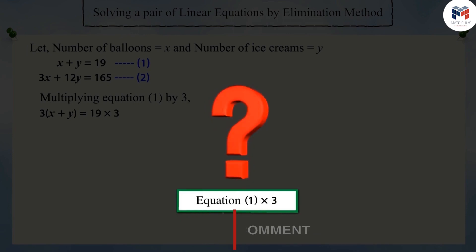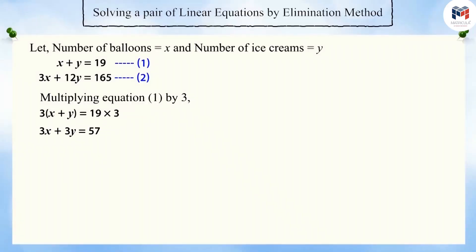Excellent! After multiplying by 3, we get 3x plus 3y is equal to 57, which can be represented as equation 3.